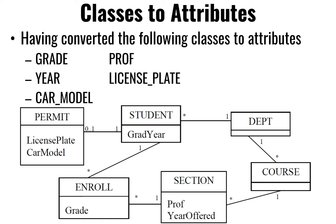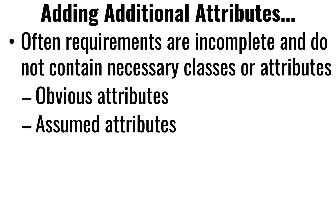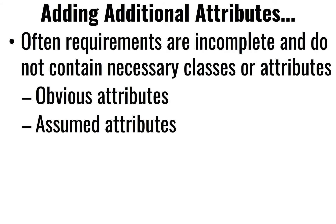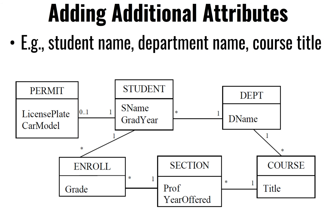So: students, permits, departments, course. There are additional attributes that might not have been described when we were interviewing our client, because perhaps it was obvious to them that these existed. For instance, they never mentioned that departments have a name, or that courses have a name or title. It's our responsibility to catch these things — that students have first names, last names, they might have an email, a date of birth, a social security number, all sorts of things. They skipped them because they were obvious or assumed, and it's our responsibility to fill in the gaps.